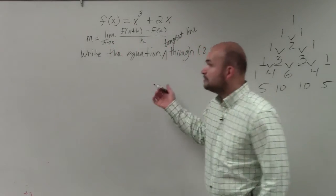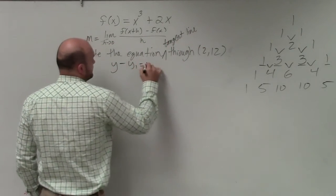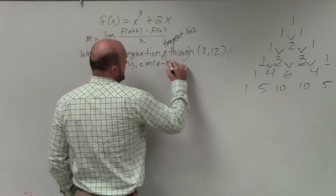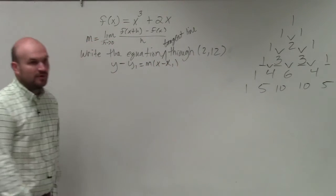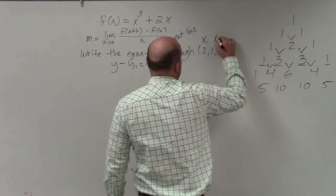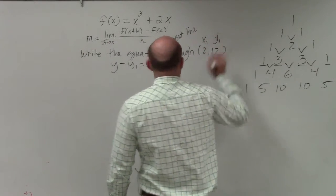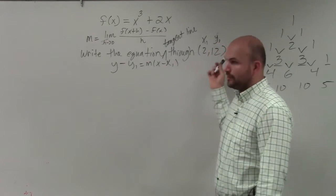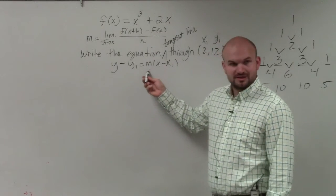And if you remember point-slope form, y minus y1 equals m times x minus x1. Well, we need to understand what the slope is, right? We have a point. We can say that's x1 and that's y1. So to write the equation of the line, we have a point, but we need to figure out what the slope is.